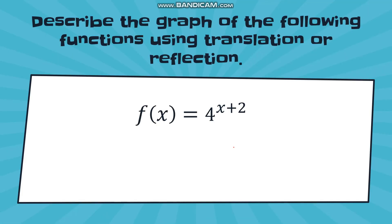Now let's describe graphs of given functions using translation or reflection. First, identify the values of h and k. For f(x) = 4 raised to (x+2): h is negative 2 and k is zero. Then identify the reference function, which follows the form b raised to x — in this case f(x) = 4 raised to x. We are comparing the given function to the reference function.